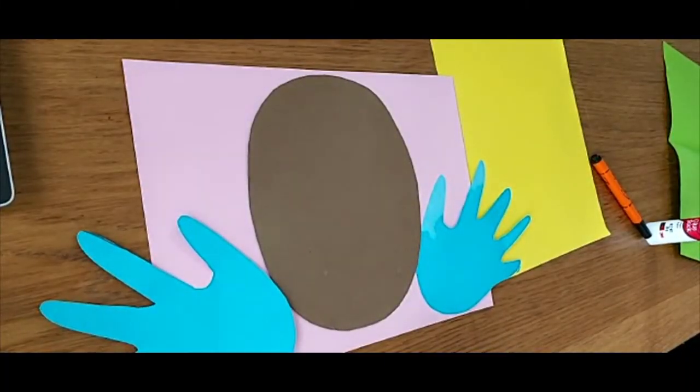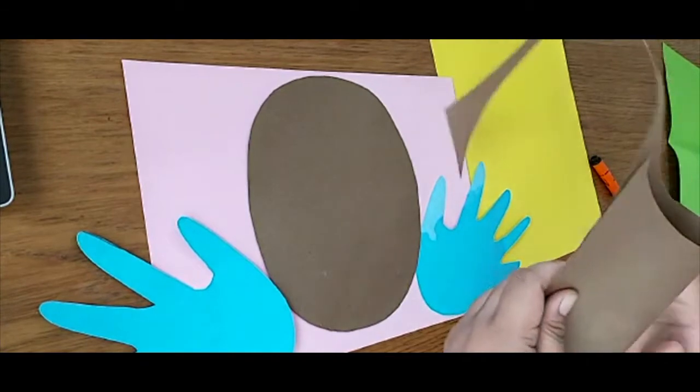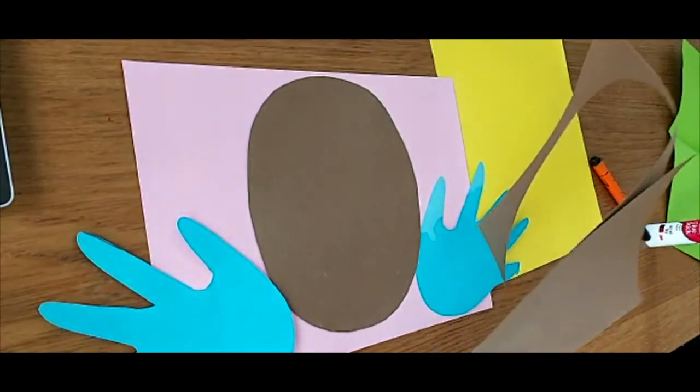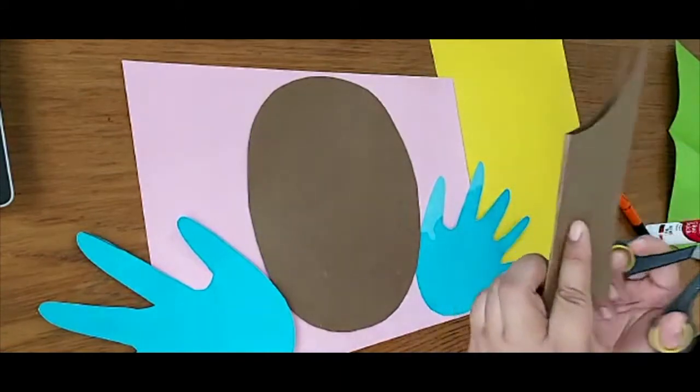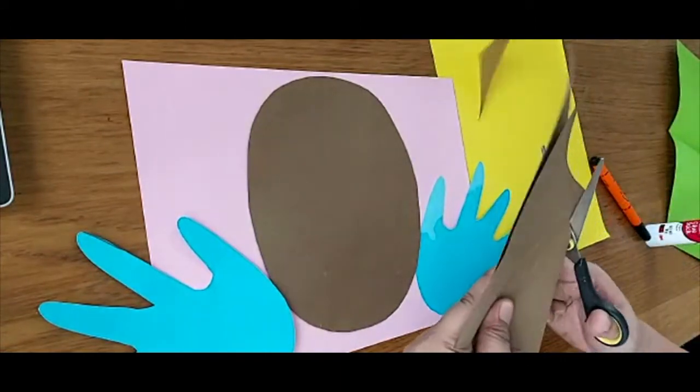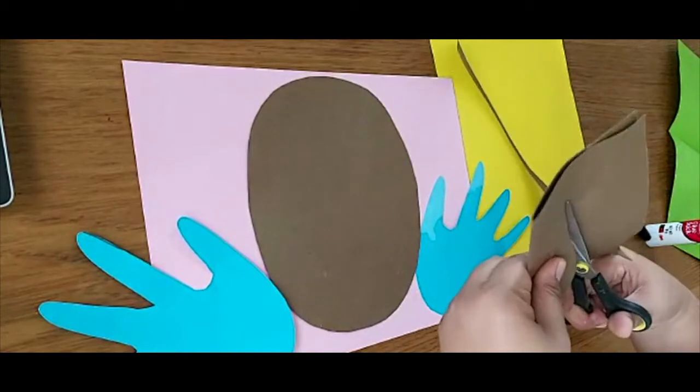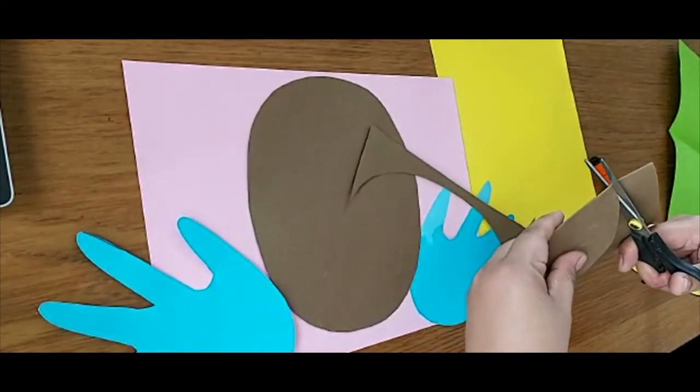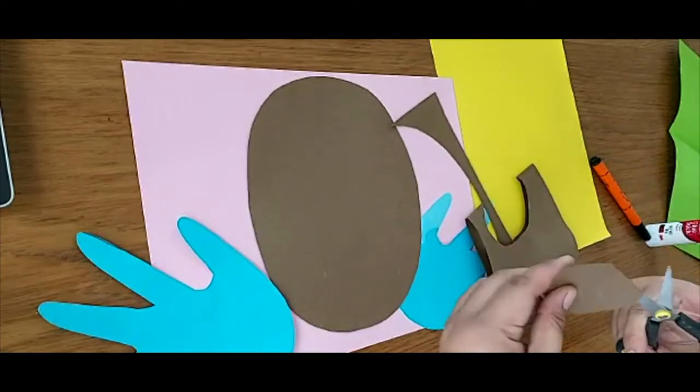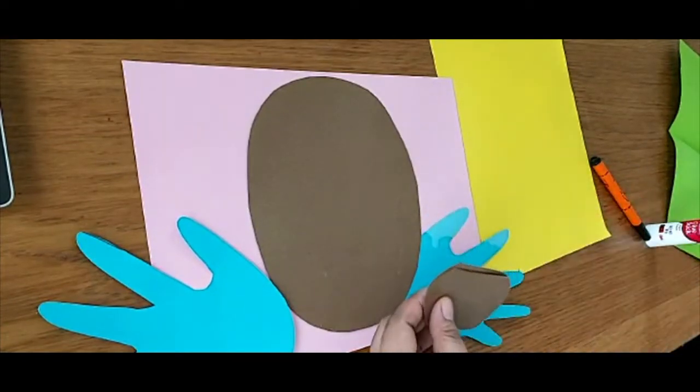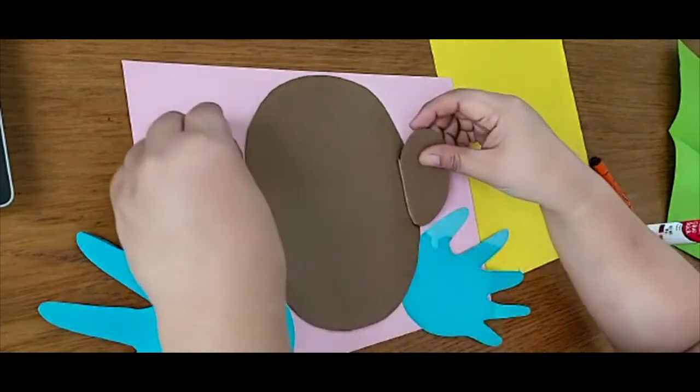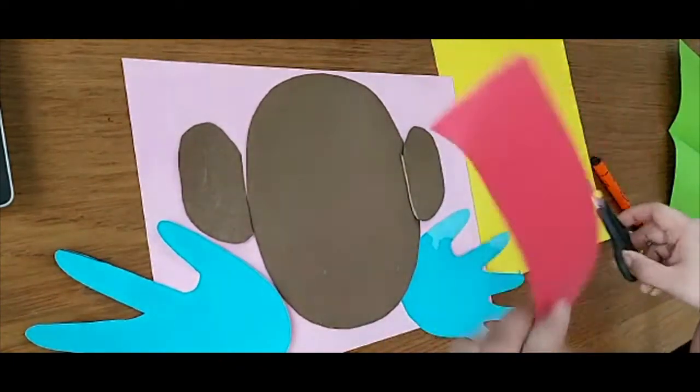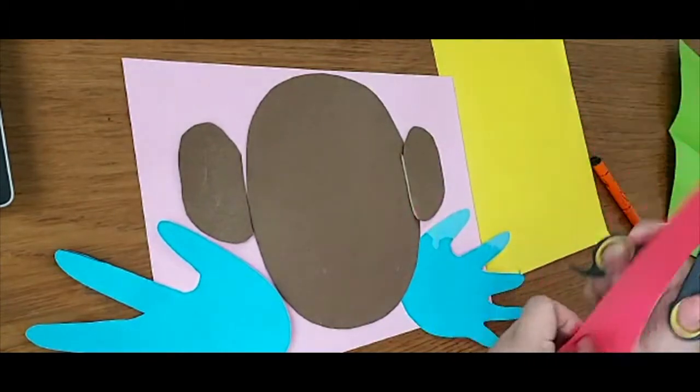Now let's try to cut the ears. Make sure you also fold your paper so you have two pieces of ears. And then I will make a curved one for the mouth.